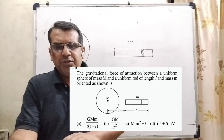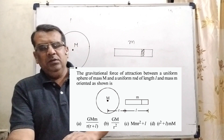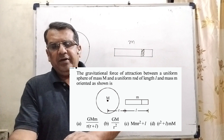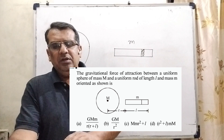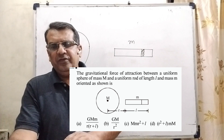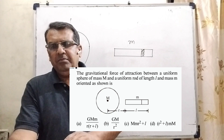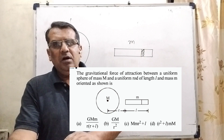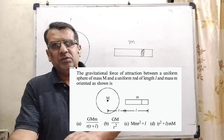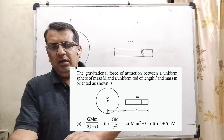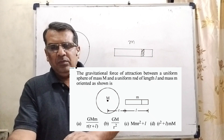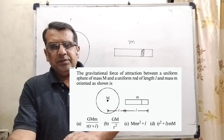Now here is the question. The gravitational force of attraction between a uniform sphere of mass M and a uniform rod of length l and mass m, oriented as shown, is?